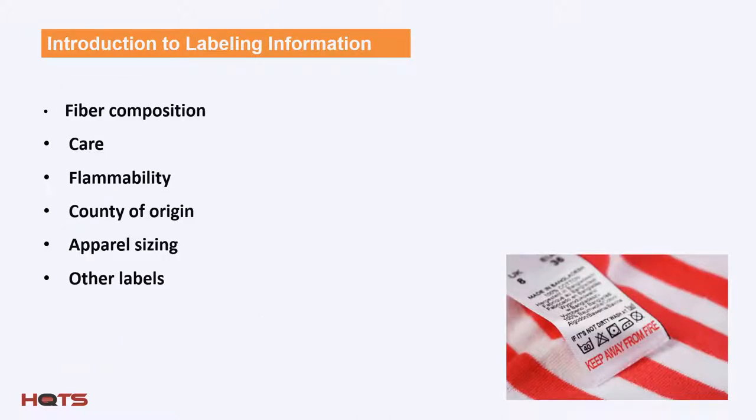The key categories of labeling information common to most regulatory requirements in the three countries we're discussing include fiber composition, care instructions, flammability notifications, country of origin, apparel sizing, and others specific to each country, which we'll discuss in more detail later in the presentation.